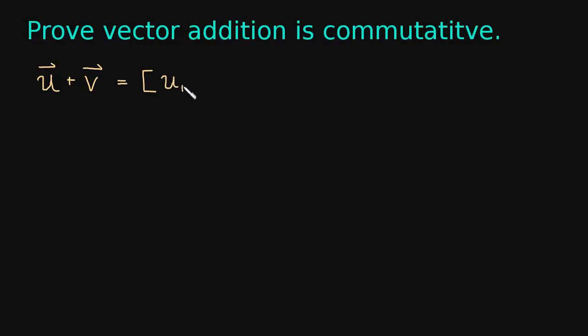Well, we said it was just u1 plus v1, u2 plus v2, and you just do this for however many components you have. So we'll go all the way to the end, un plus vn.